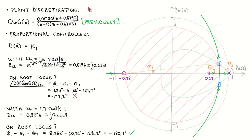Next we discretize the plant. We have calculated the equivalent discrete plant model in a previous video as shown here. This plant has a zero at z equal to minus 0.8797, a pole at z equal to 1, and a pole at z equal to 0.6703. We now go on to design a digital controller to satisfy the transient specifications.